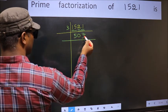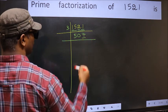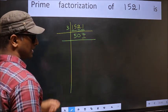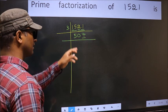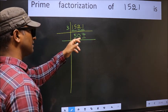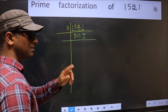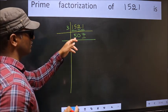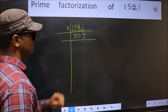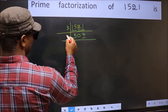Now last digit 7 is not even, so not divisible by 2. To check divisibility by 3, add the digits: 5 plus 0 plus 7. We get 12, and 12 is divisible by 3, so this number is also divisible by 3. So take 3 here.